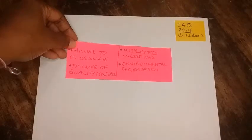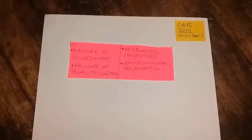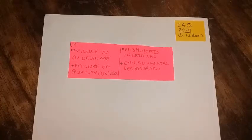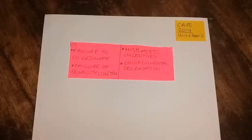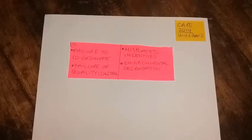The last section, B Part 2, asks us — given the disadvantages of a centrally planned economy — to discuss two possible economic reasons for the downfall of this type of economic system over the last three decades, for eight marks. I'll give you four reasons: failure to coordinate, failure of quality control, misplaced incentives, and environmental degradation. For failure to coordinate: in command economies the state tries to coordinate all economic decisions throughout the country, which proved to be an impossible task, resulting in bottlenecks, production shortages of some goods, and gluts in others.